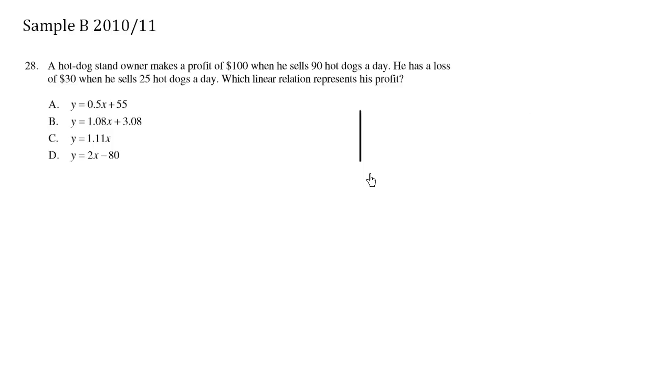So what we have here is a graph, and on this graph we have profit in dollars and we have number of hot dogs sold, and we're given two points.